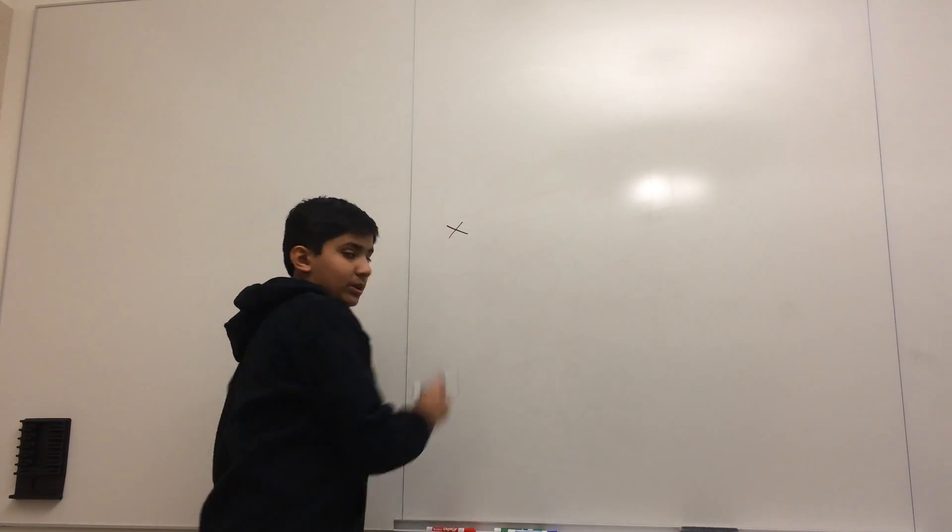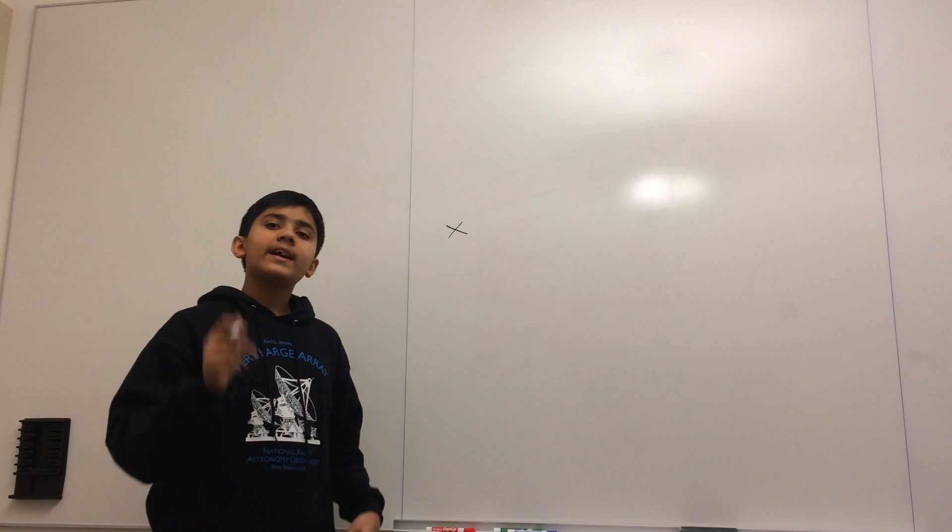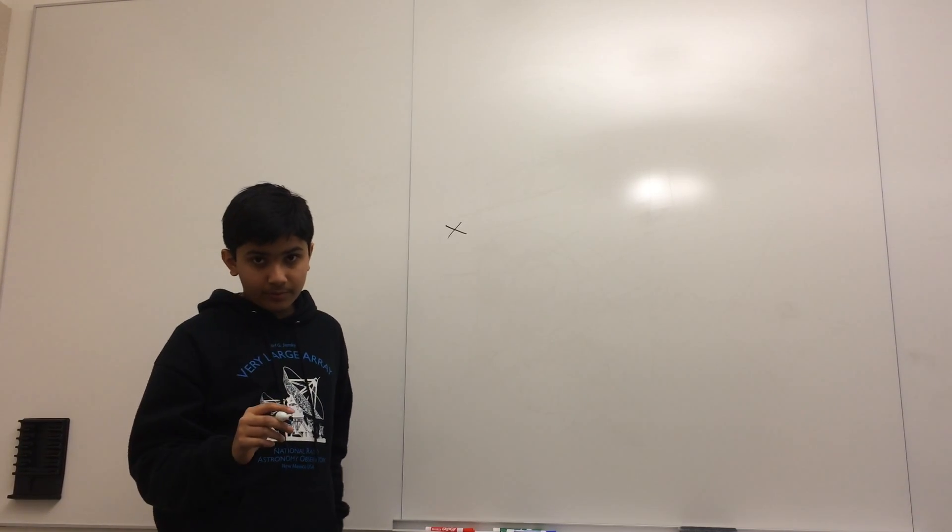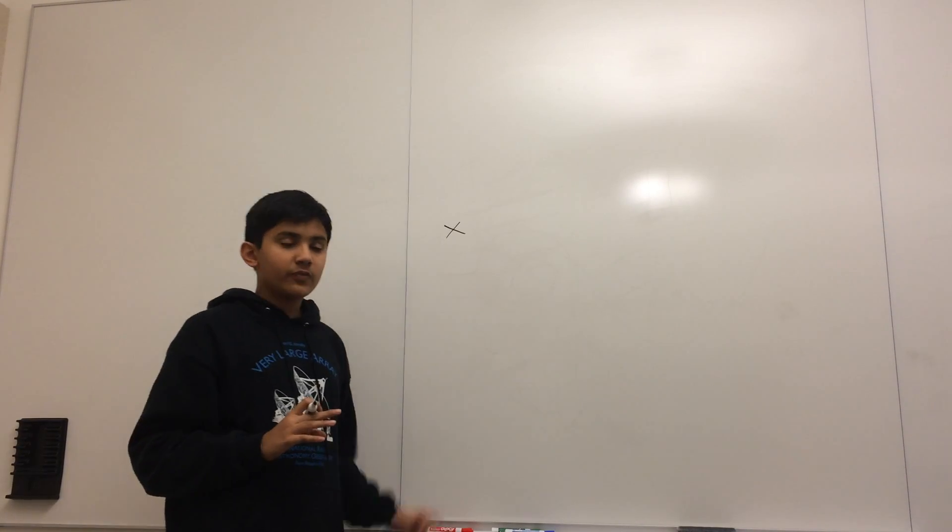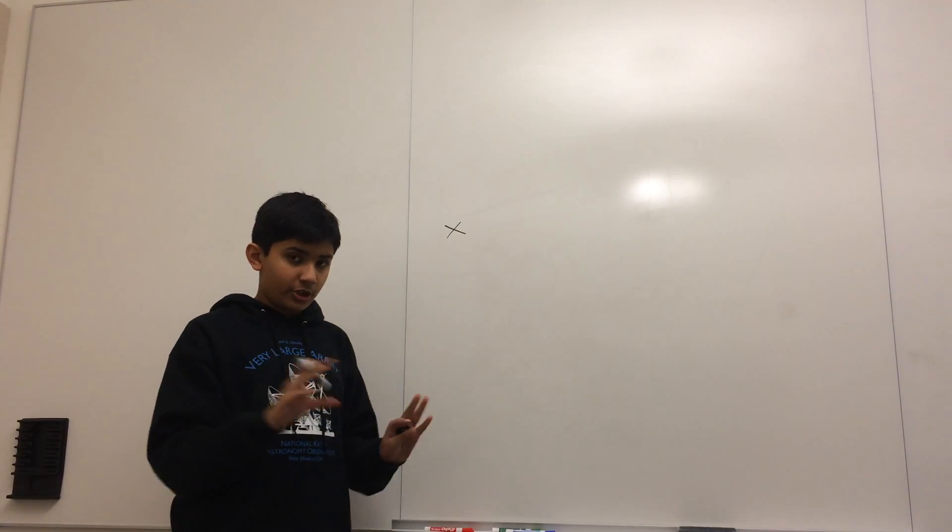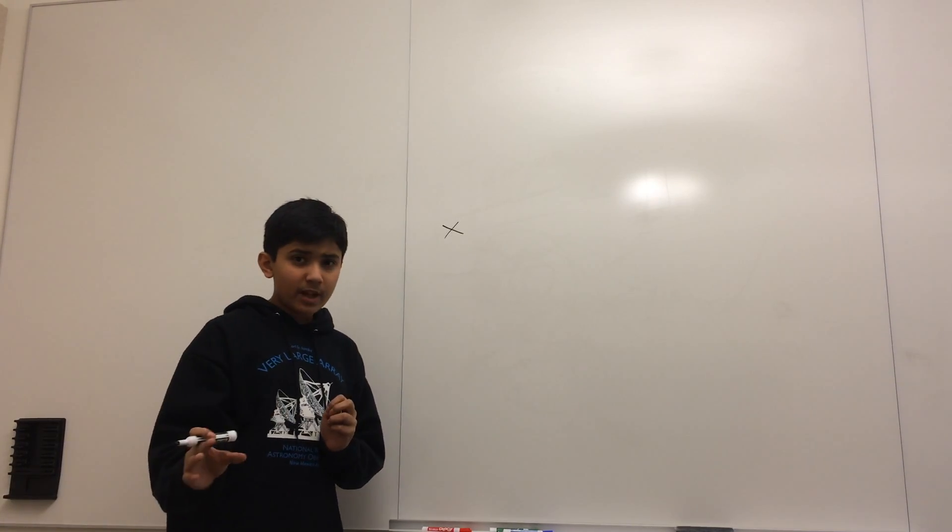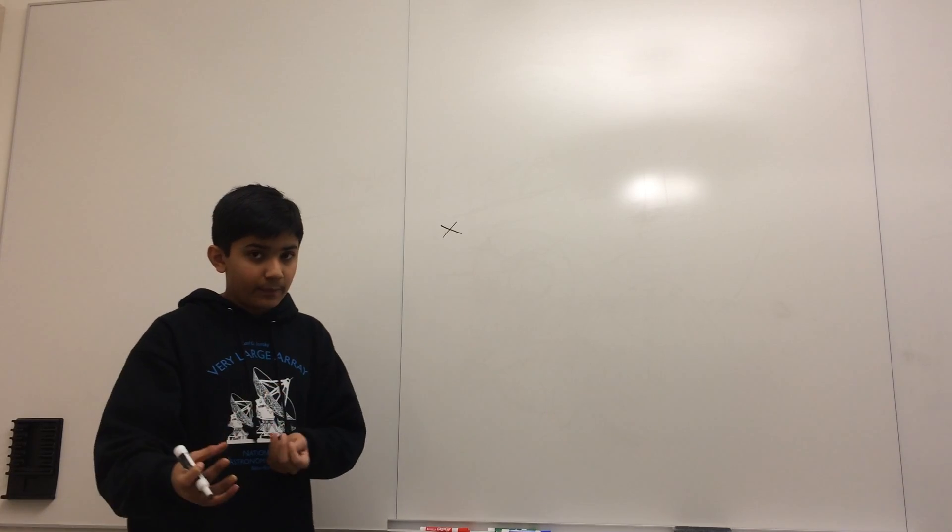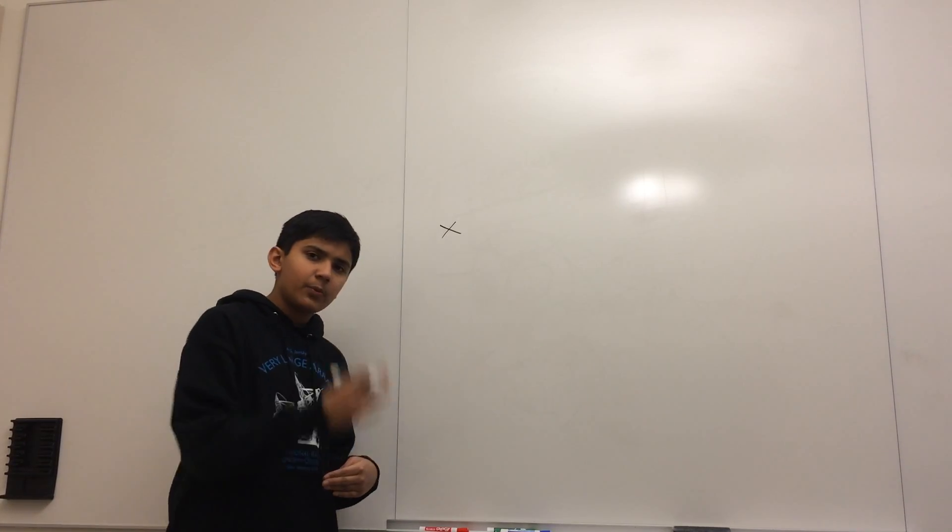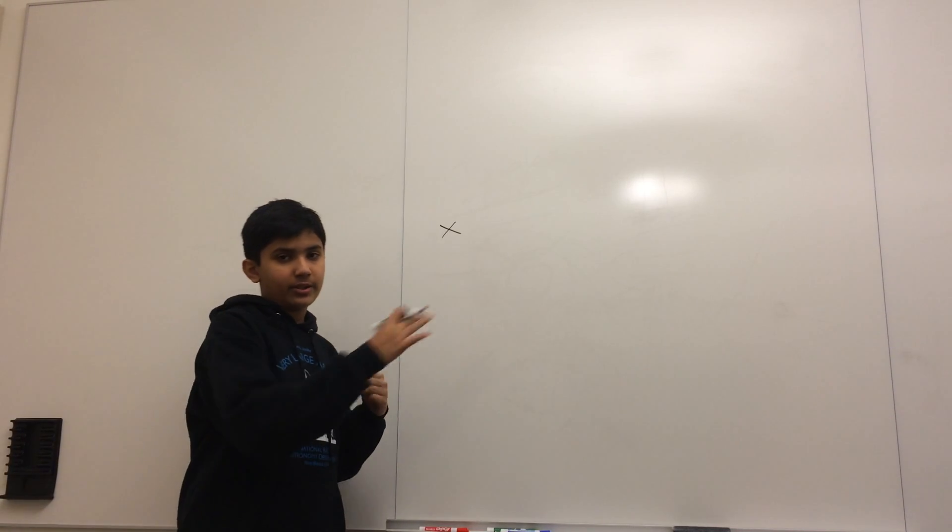Say we start with the number x. Now, what we're going to do is apply t as many times as you need to, minimum number of times you need to, such that x is positive. So if x is already positive, stop. But if x is negative, apply t once. If it's positive now, stop. If it's still negative, apply t once more. Just keep adding one until it's positive. Keep track of how many times you have to add one.